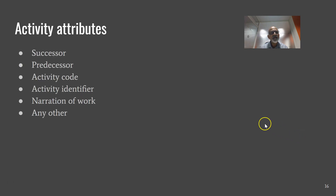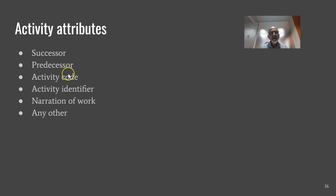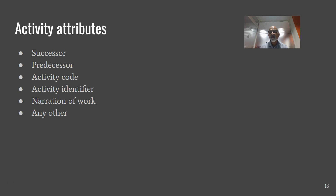Once we know the activities, the next step is creation of activity sequences. Every activity is either a successor or a predecessor to another activity. Every activity has an activity code, an activity identifier, and maybe a small narration of the work. All this additional information about an activity we call activity attributes — nothing but additional information about activities.